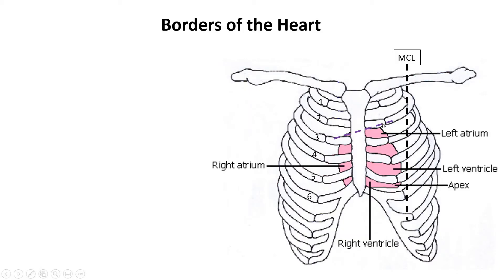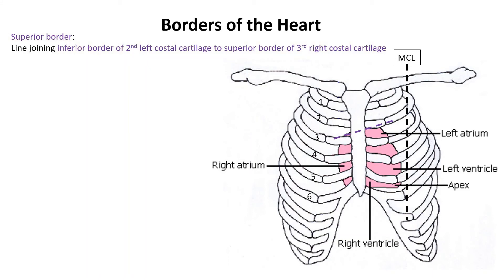For the superior border — made mostly of the left atrium and partly of the right atrium — this is the second left costal cartilage and this is the third right costal cartilage. Drawing an imaginary line between them gives us the superior border. More specifically, it extends from the inferior boundary of the left second costal cartilage to the superior boundary of the right third costal cartilage.